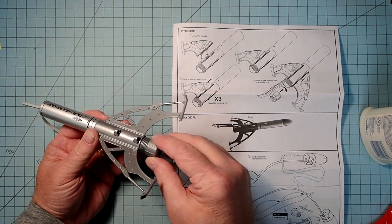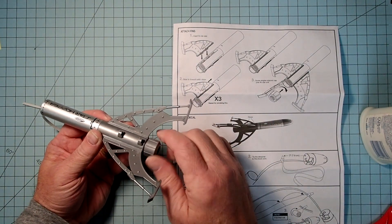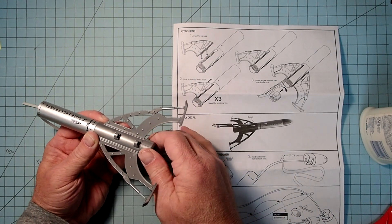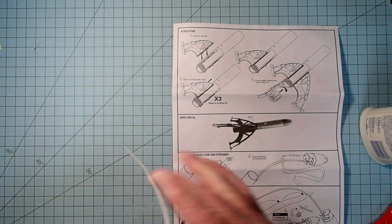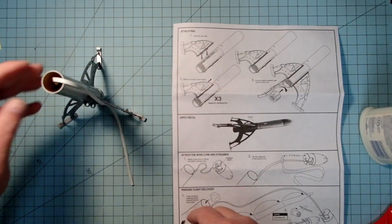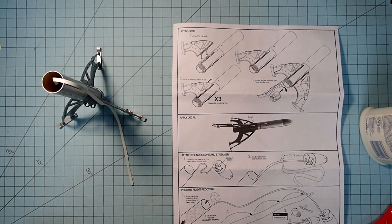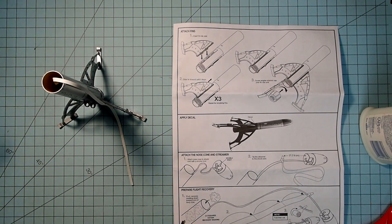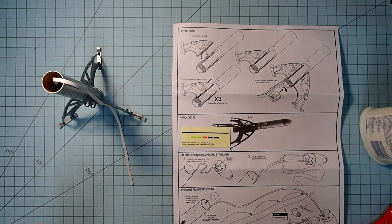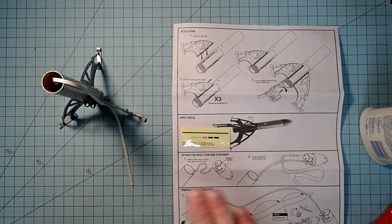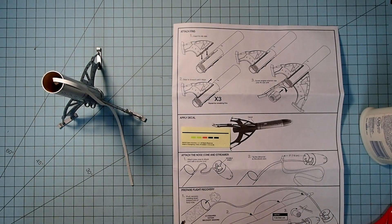And then we've got the motor retainer that's just going to screw on right here. Now for the decals, before I put the decals on, I'm going to thoroughly wash my hands to decrease the amount of fingerprints and oils that get onto the self-stick adhesive there. So I will be right back after I wash.